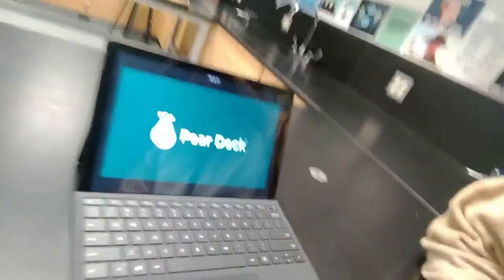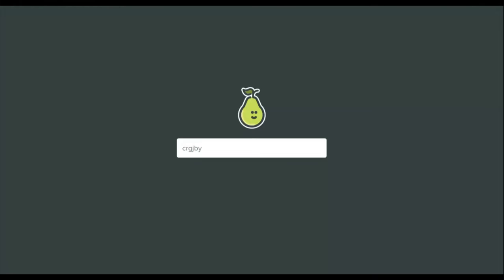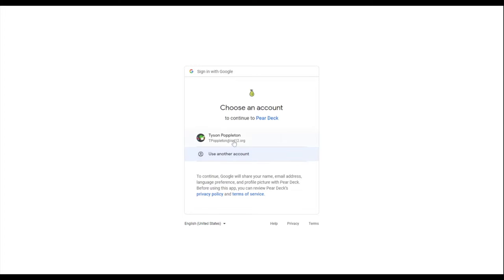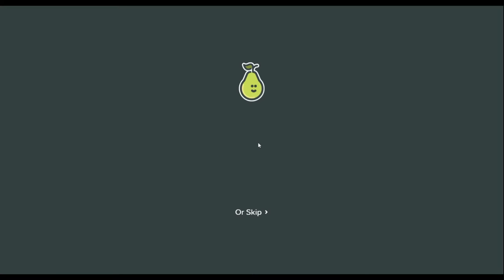So what does Pear Deck look like? Let's take a moment and see what the students see. After the teacher has set up the Pear Deck slides, students will log into Pear Deck and they'll have to enter a certain access code, similar to what you might see in other web apps such as Kahoot. If they haven't done so already, they may be asked to sign in using either their Google or Microsoft account. This is for accountability.